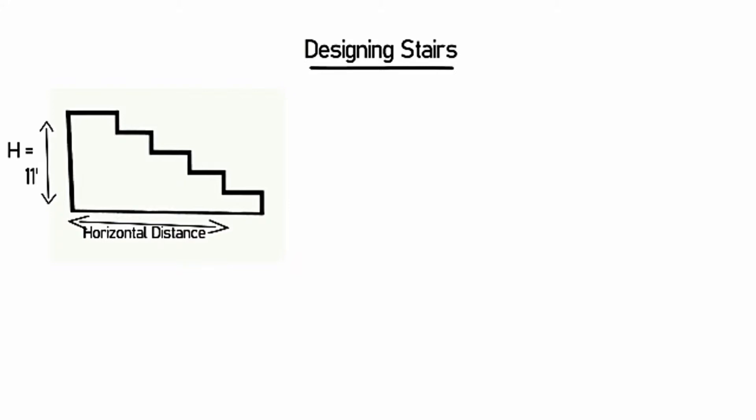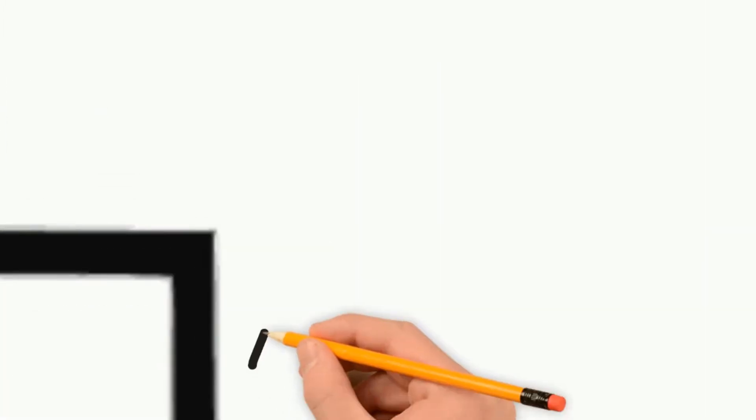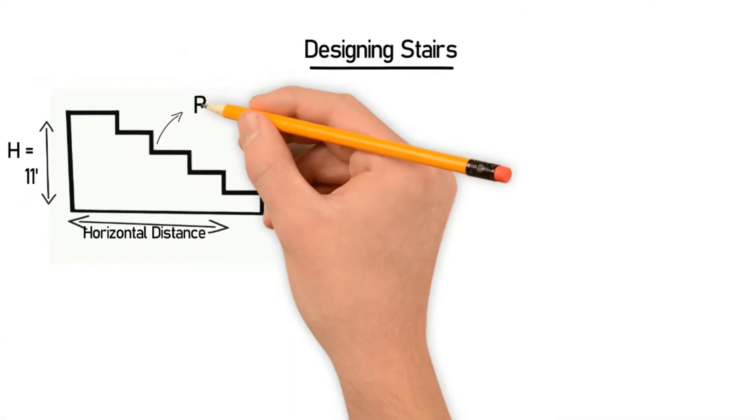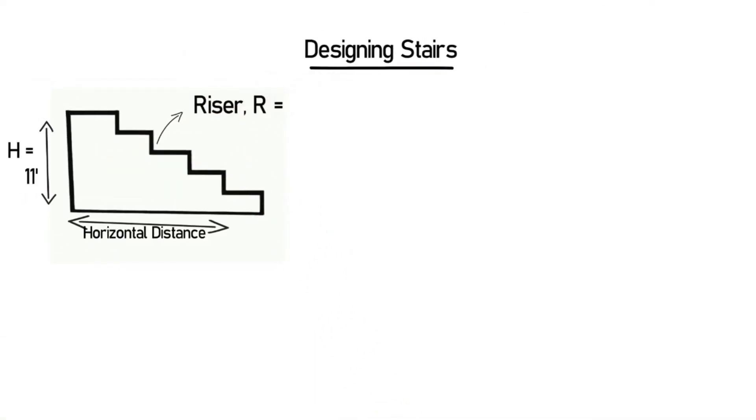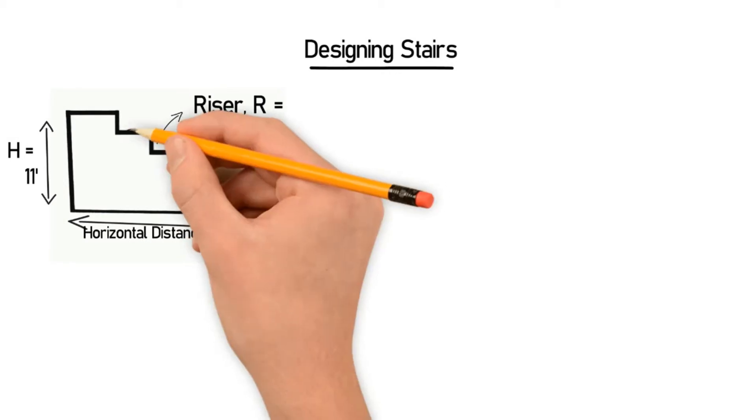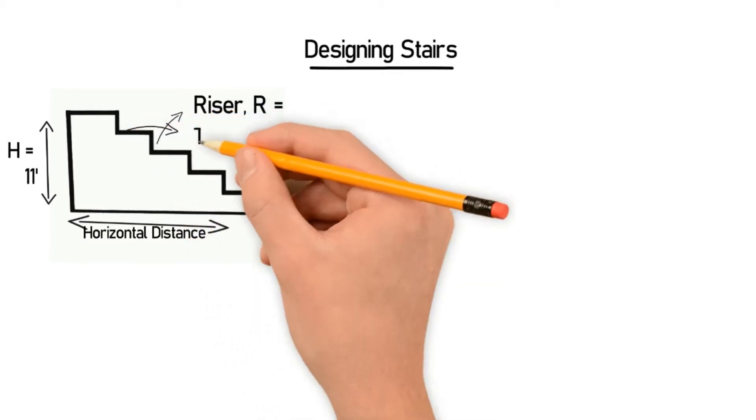The first one is riser R, and the second one is tread T. Riser is the height of one step. Here you can see the height of the step, this is called riser. And this portion, the horizontal portion, this is called the tread.